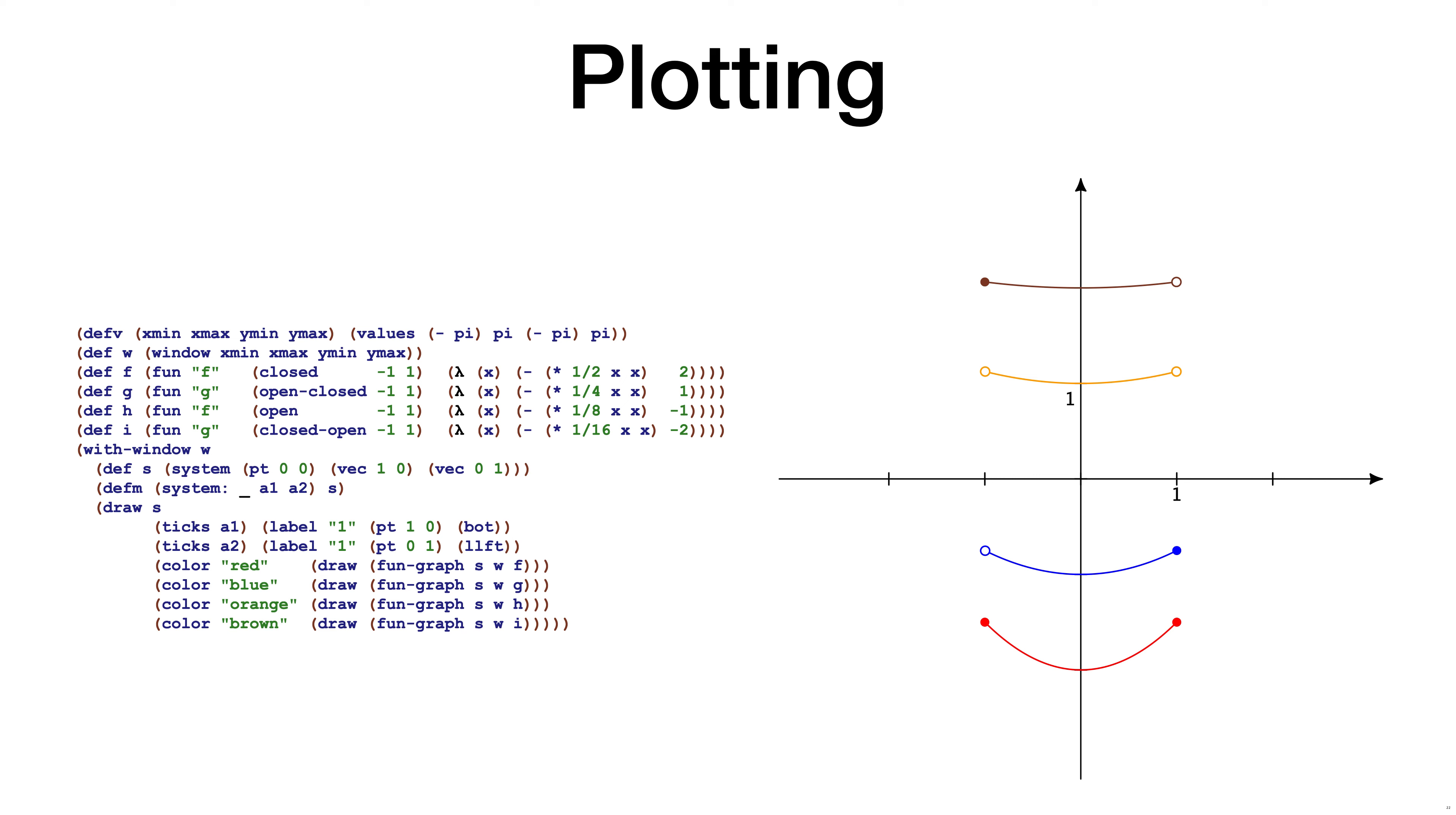The first application is plotting graphs of functions of one variable. At the left, we see we have four functions f, g, h, and i. The function f is defined on the closed interval from minus 1 to 1. The function g is defined in an interval that starts at minus 1 and ends in 1, but the function is of the open-closed type. At the figure on the right, we can see that the start and end of the graph is marked correctly.